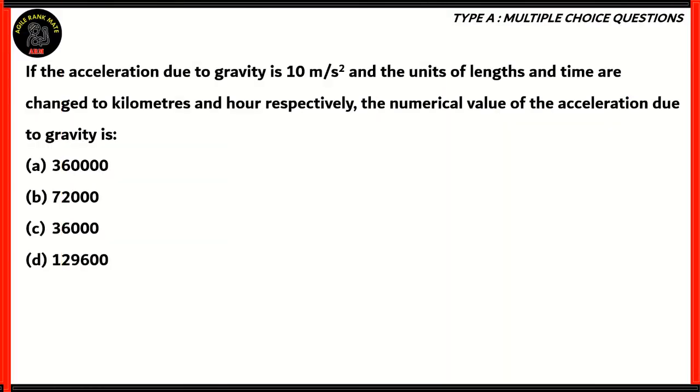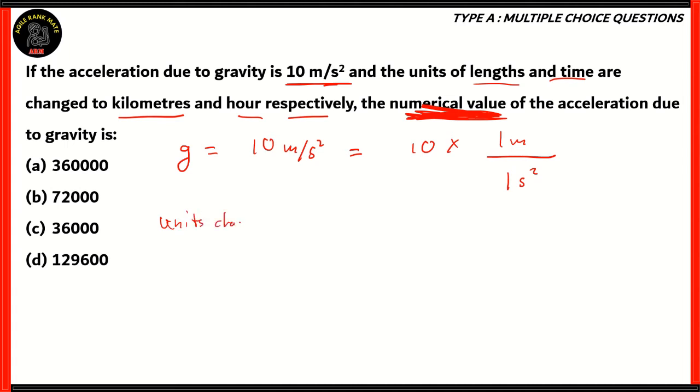Now, let's move on to our final question. If the acceleration due to gravity is 10 meters per second squared, and the units of length and time are changed to kilometers and hour, respectively, the numerical value of the acceleration due to gravity is A, B, C, or D. So, how do we solve this question? Well, we know that the acceleration due to gravity, G, is equal to 10 meters per second squared. That means we have 10 times 1 meter over 1 second squared.